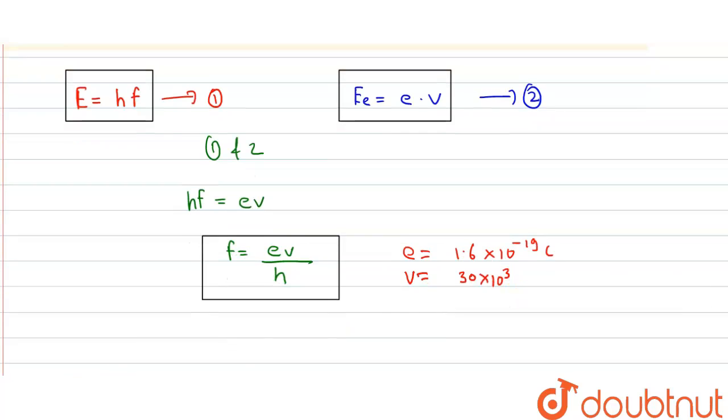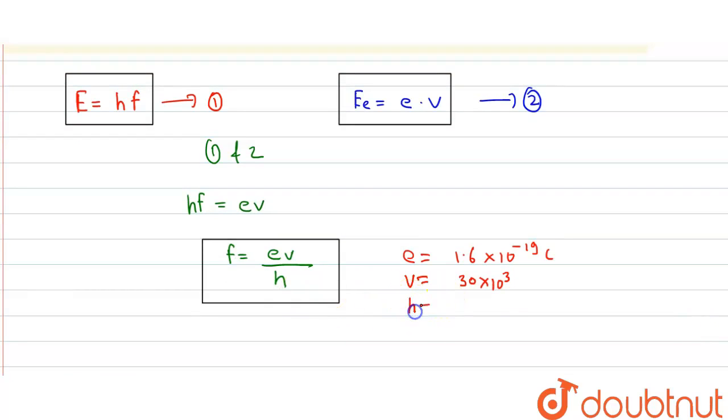h is Planck's constant. In electron-volt units, h = 4.14 × 10^-15 eV·s.